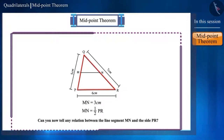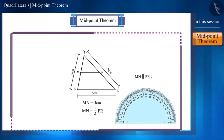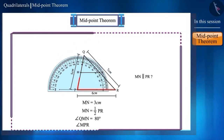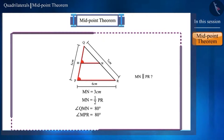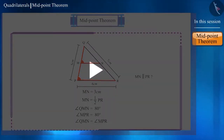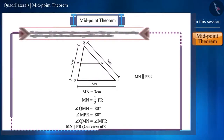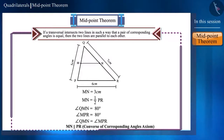Can you tell any other relationship by looking at the figure? Looking at it, both these lines seem to be parallel. We can test this. Let us find the measurement of the angles — angle QMN and angle MPR — with the help of a protractor. The measurement of these two angles is equal. These two angles are corresponding angles formed by the intersection of the line segments MN and PR with the transversal PQ. If we use the converse of the corresponding angles axiom here, then we can say that the line segment MN and side PR are parallel.